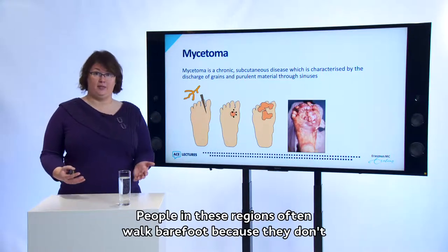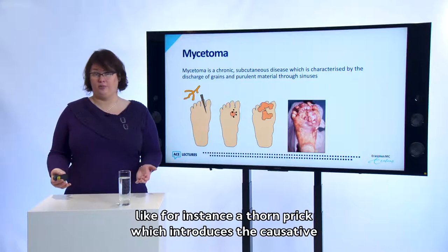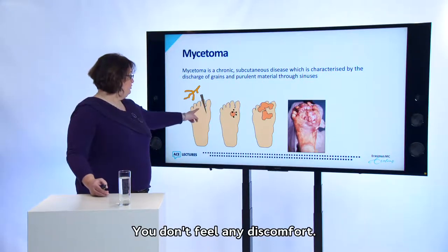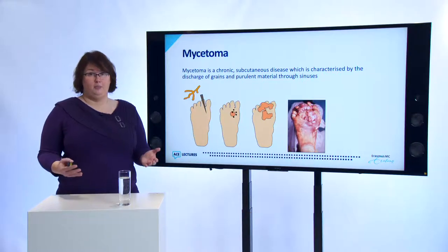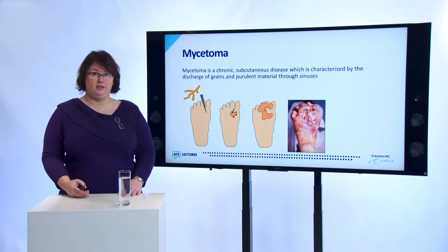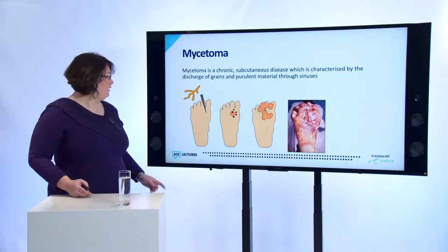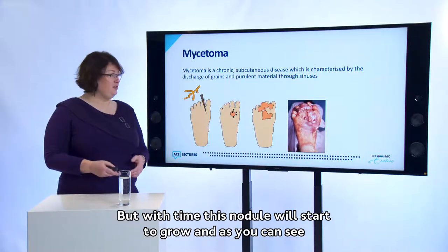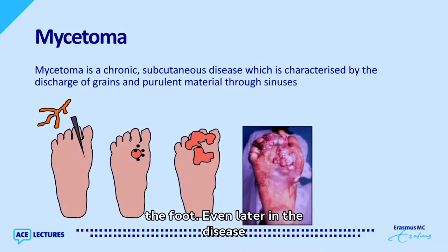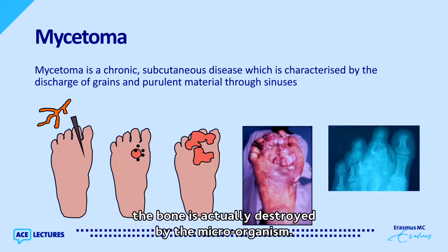People in these regions often walk barefoot and can get a minor trauma like a thorn prick which introduces the causative agent into the sole of the foot. You don't feel any discomfort — it's just like a normal thorn prick. But inside the foot the microorganism starts to grow and develops into a small granule called a grain. On top of the foot you can see a small nodule, but with time it grows into a very big tumorous lesion, and eventually the bone is invaded and destroyed by the microorganism.